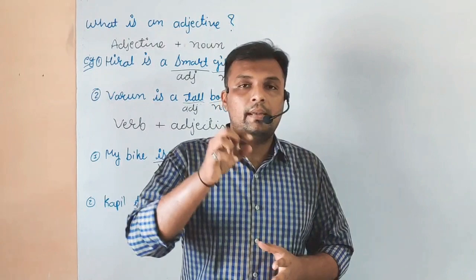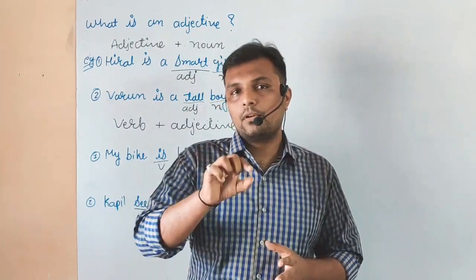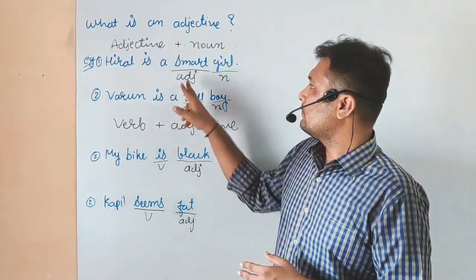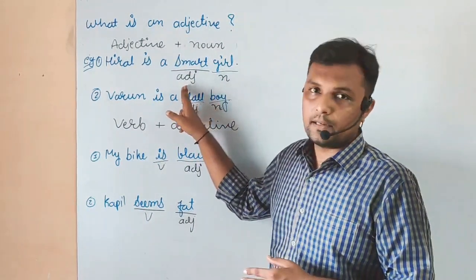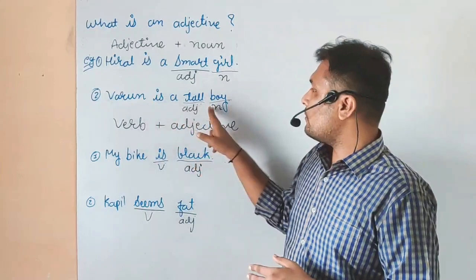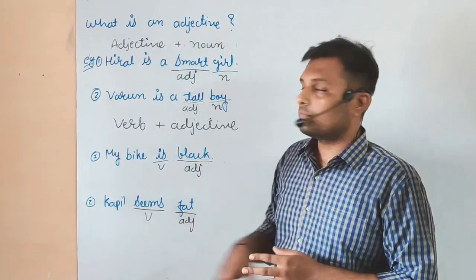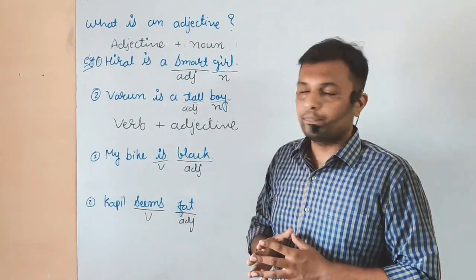Adjectives come right before a noun. Hiral is a smart girl - adjective plus noun. Varun is a tall boy - tall is our adjective, boy is our noun, adjective plus noun.